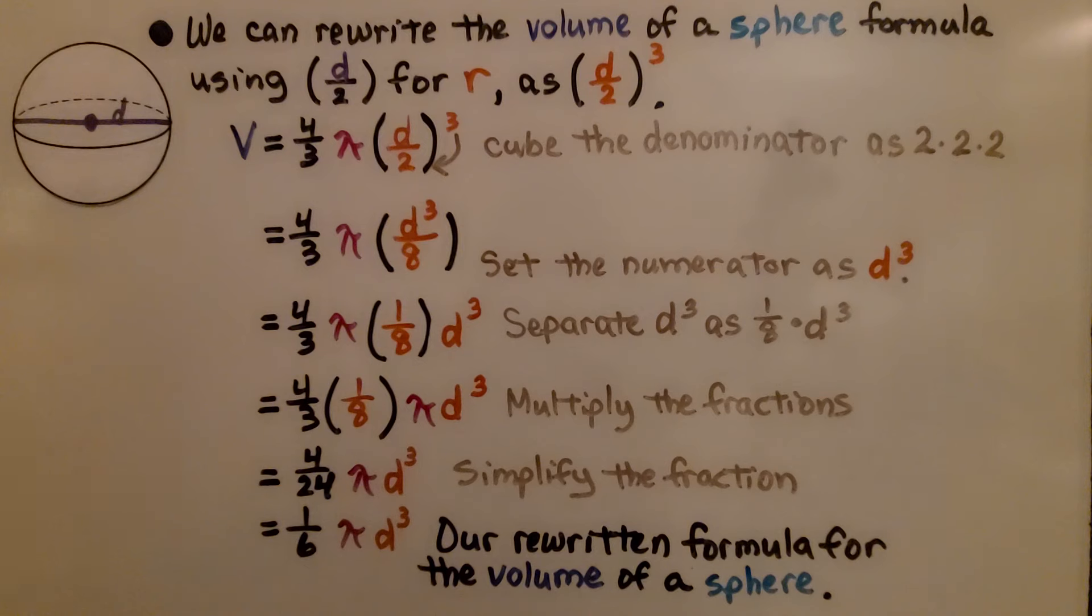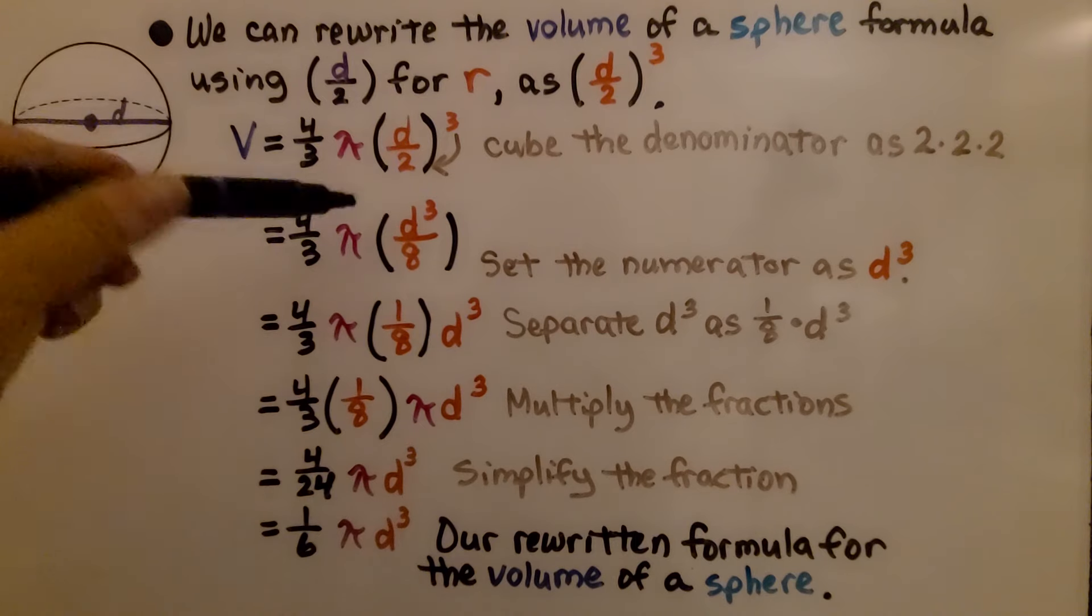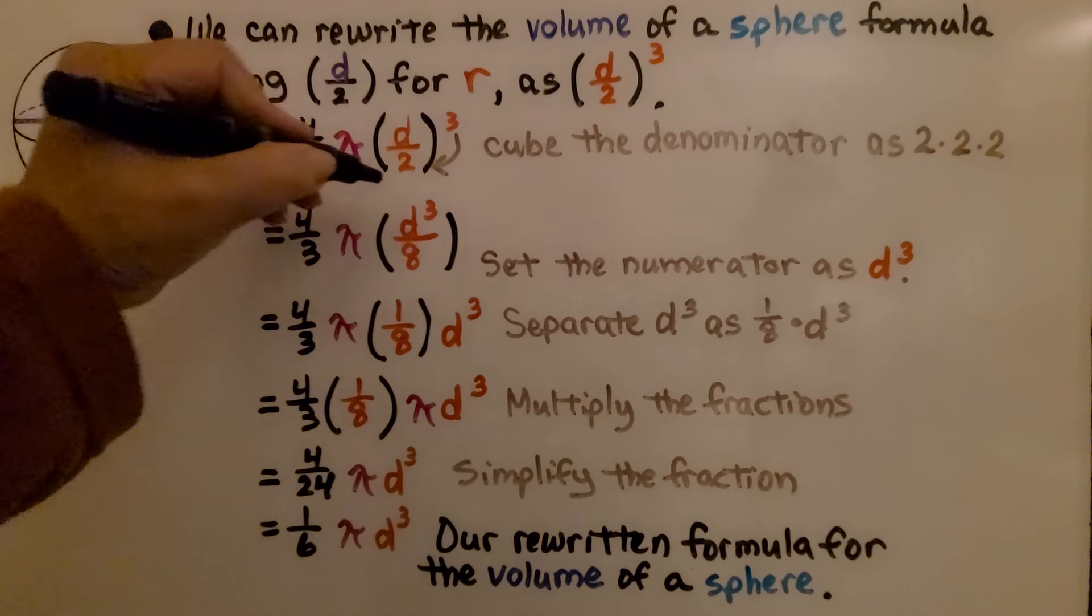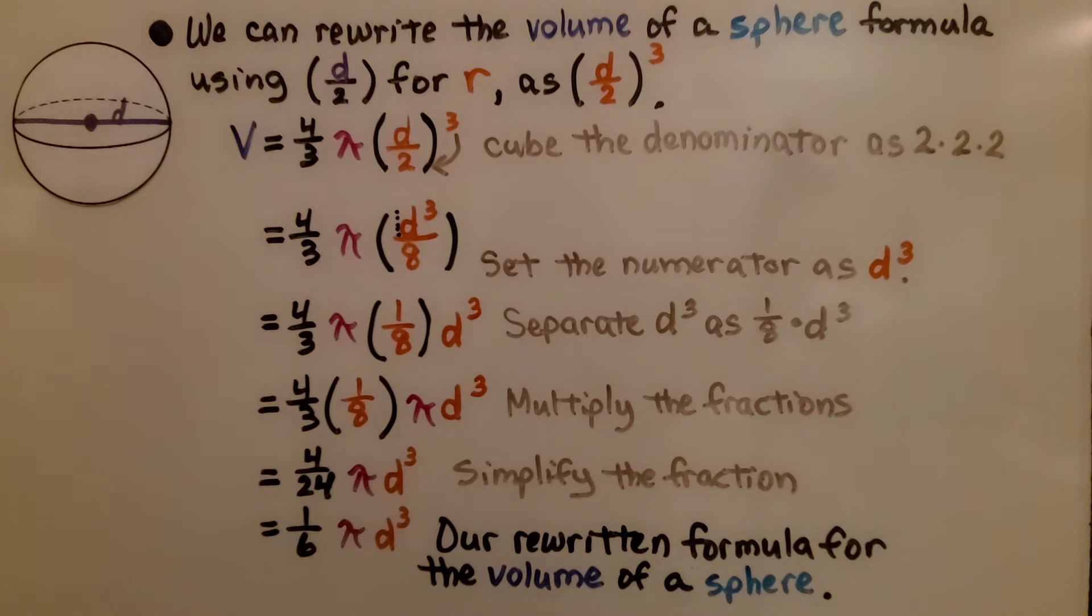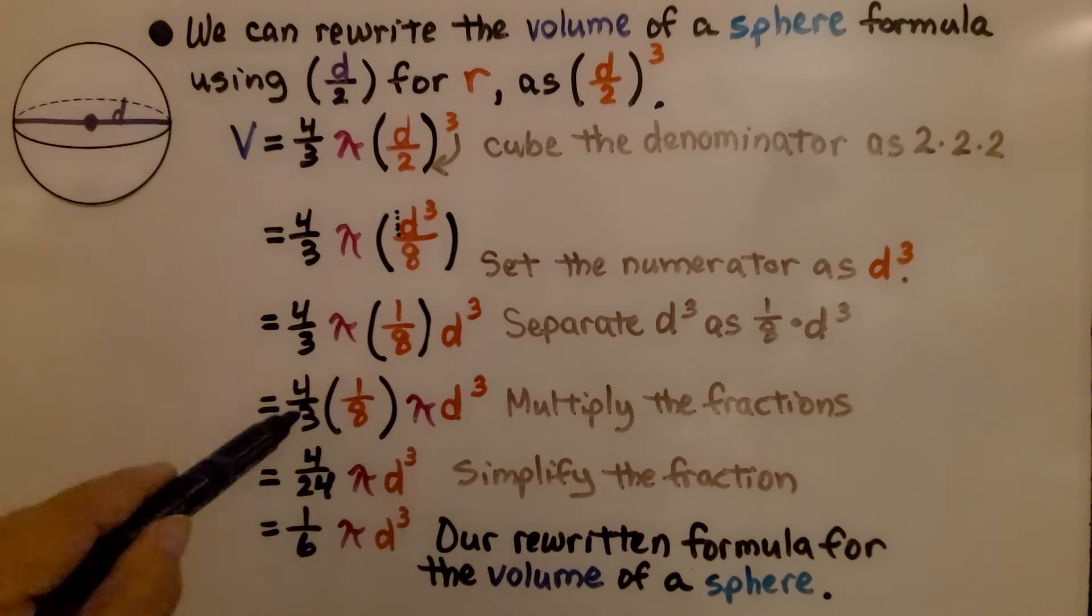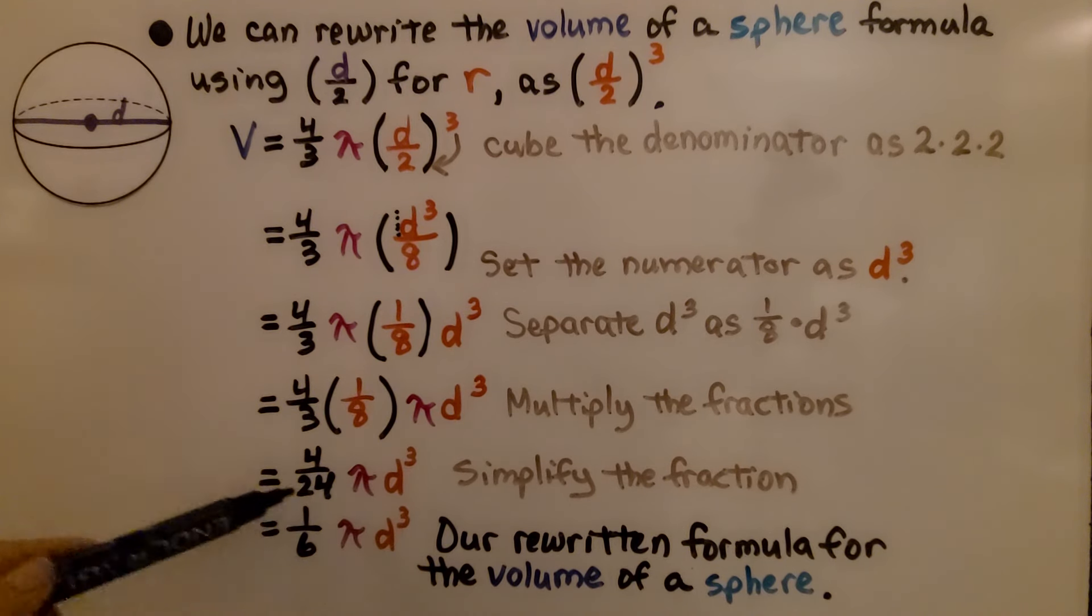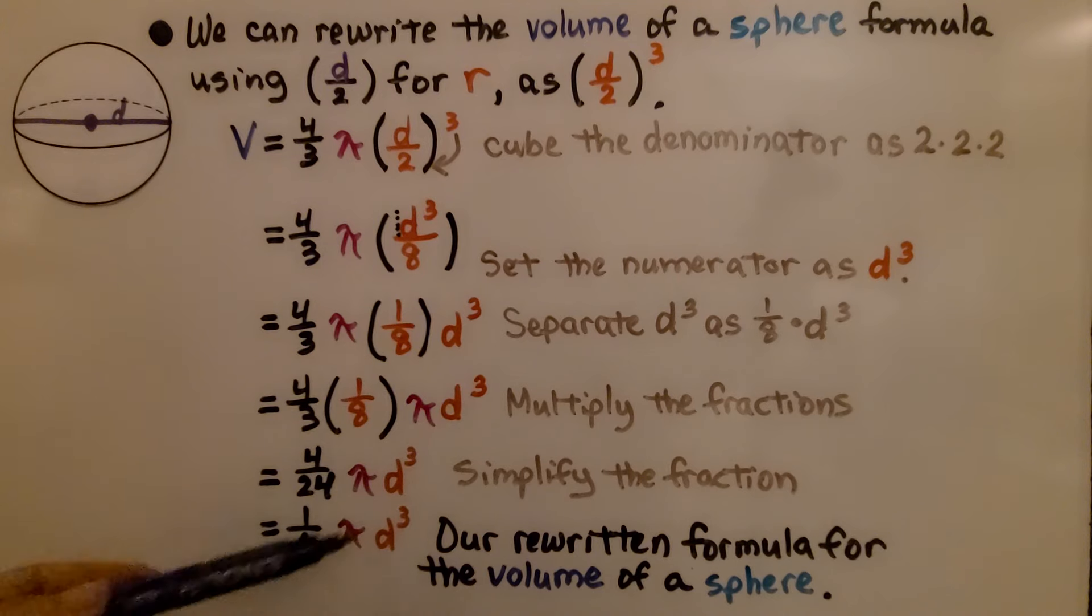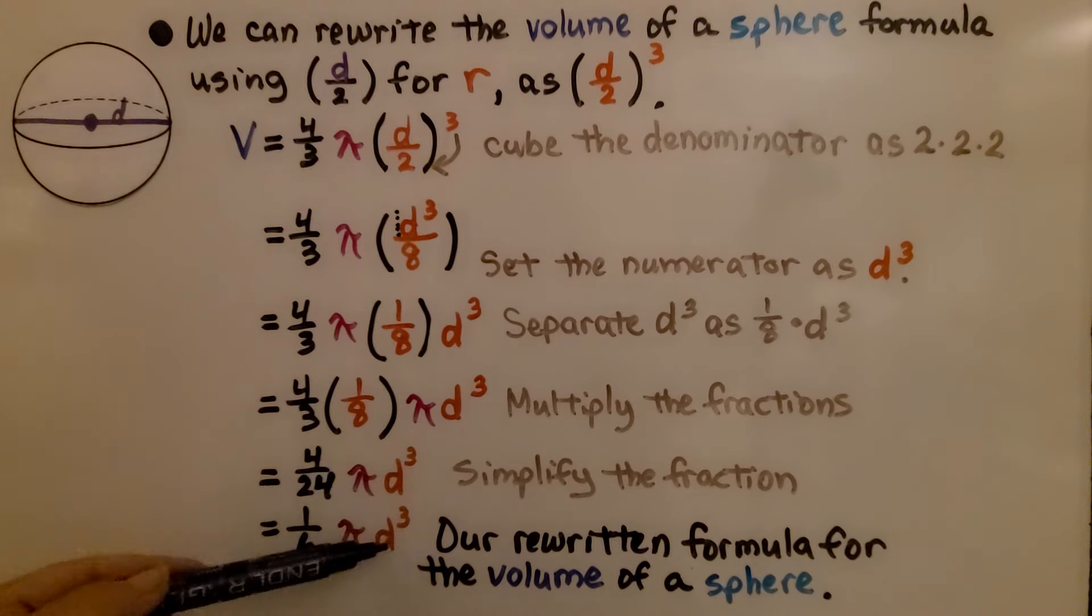Now we can separate this d to the third power and the 8, because we know when we have a variable like this there's an invisible 1. We can say that this is 1 eighth times d to the third power and separate them. We multiply the fractions 4 thirds times 1 eighth. We get 4 24ths. We simplify the fraction down to 1 sixth, and notice the pi and the d to the third power just coming along.